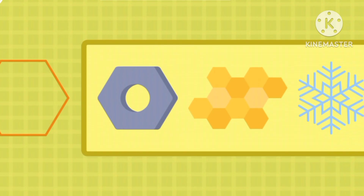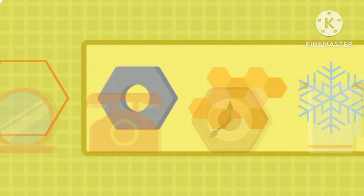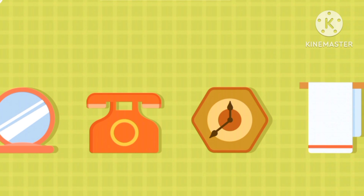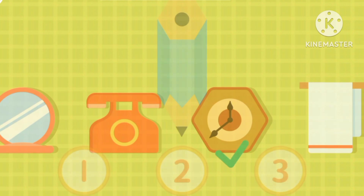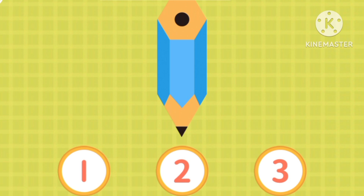Now let's spot — where is hexagon? It's the clock. How many hexagons are there? There is only one.